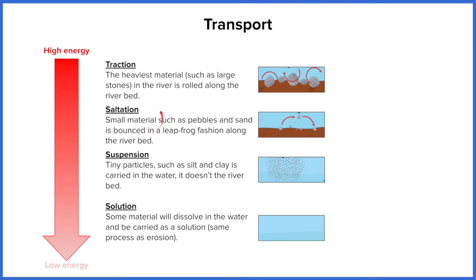Further down we've got saltation, also called leapfrogging. These smaller pebbles can be slightly picked up by the river and its current but it's still too heavy to maintain that and it has to drop it again, in that leapfrogging motion.